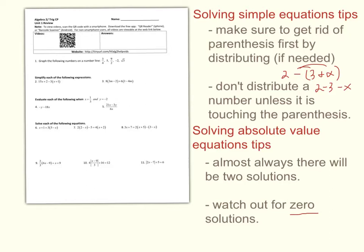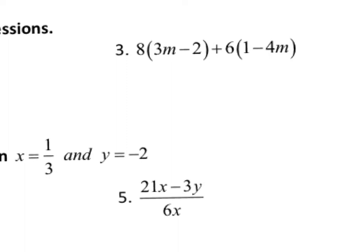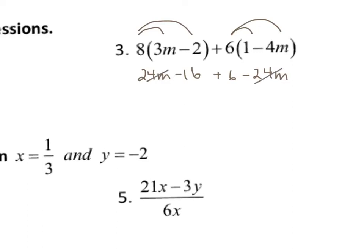Let's look at question 3 on the review. The first step: you've got parentheses, so you've got to get rid of them by distributing. I'm going to distribute the 8 and distribute the 6. 8 times 3m is 24m, 8 times negative 2 is negative 16. 6 times 1 is 6, and 6 times negative 4m is negative 24m. The like terms 24m and negative 24m cancel, leaving negative 16 plus 6, which gives me negative 10.